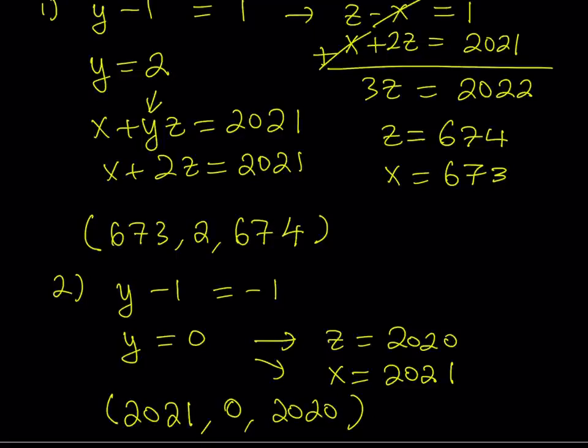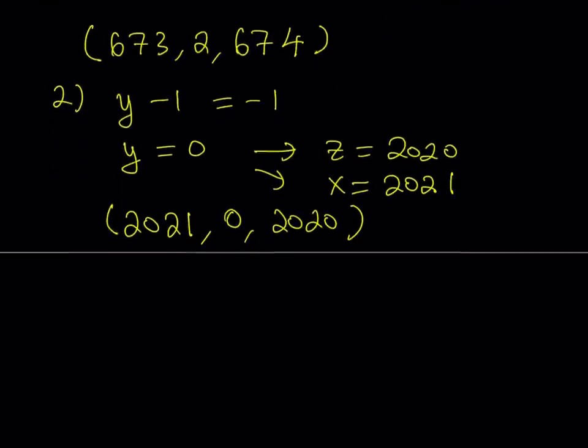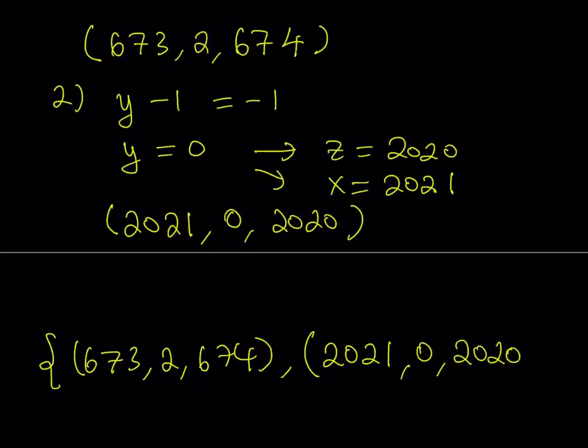Since 1 cannot be factored in any other way, we don't get any other solutions. Our solution set has two solutions: (673, 2, 674) and (2021, 0, 2020).